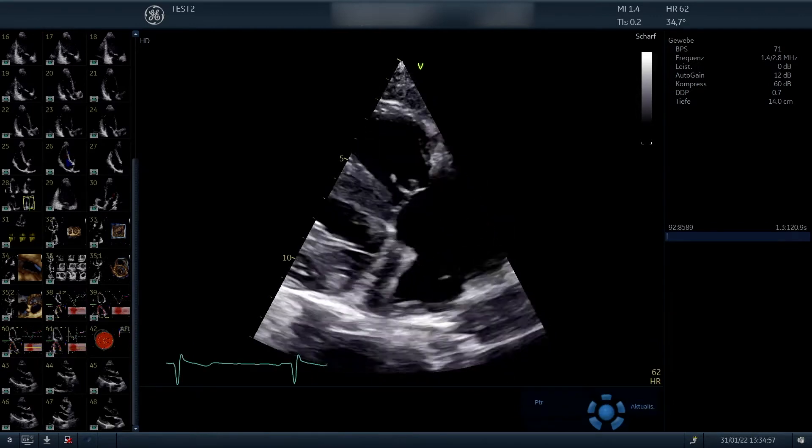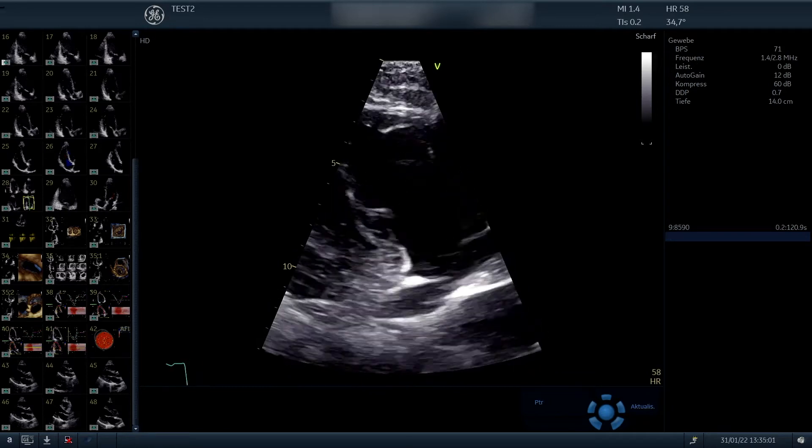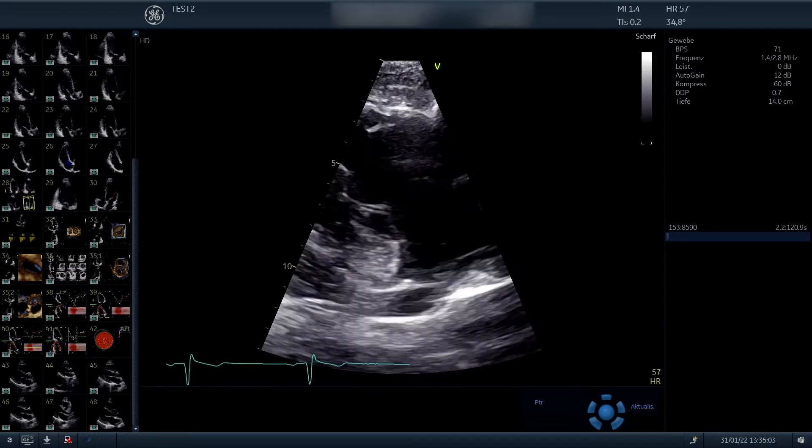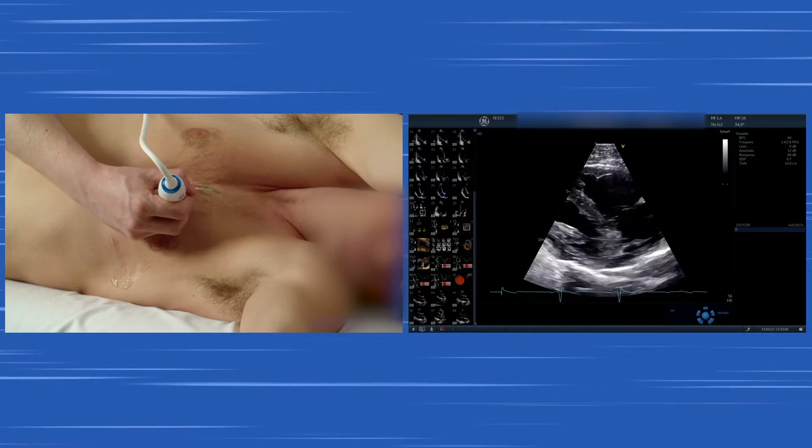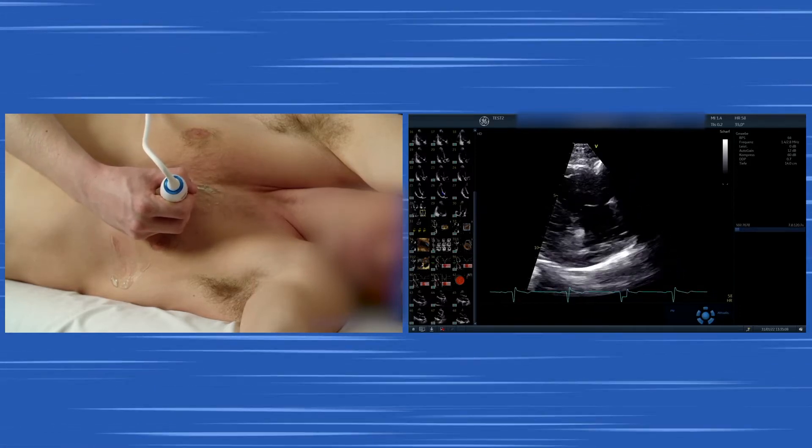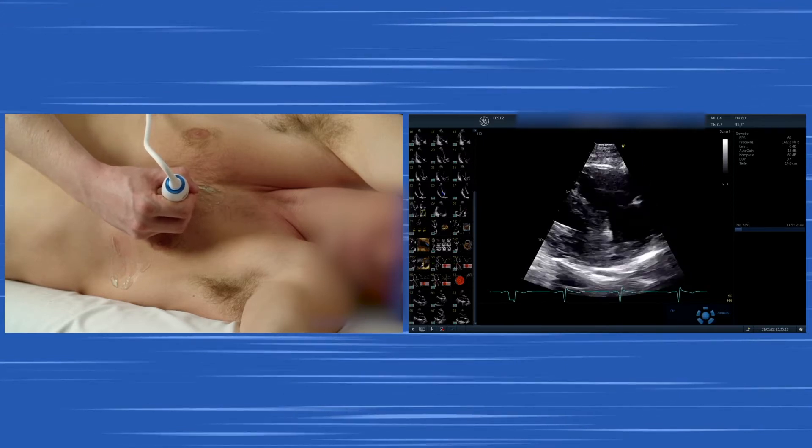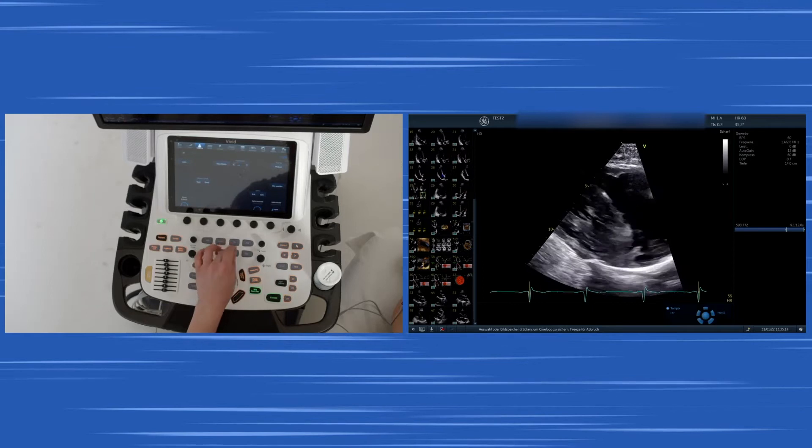You can also activate or deactivate a feature called the virtual apex. That's the virtual apex so you have less near field artifacts. You see now the inflow view of the right ventricle. You also can tilt the beam where you want to scan to optimize your imaging in the center of your imaging.